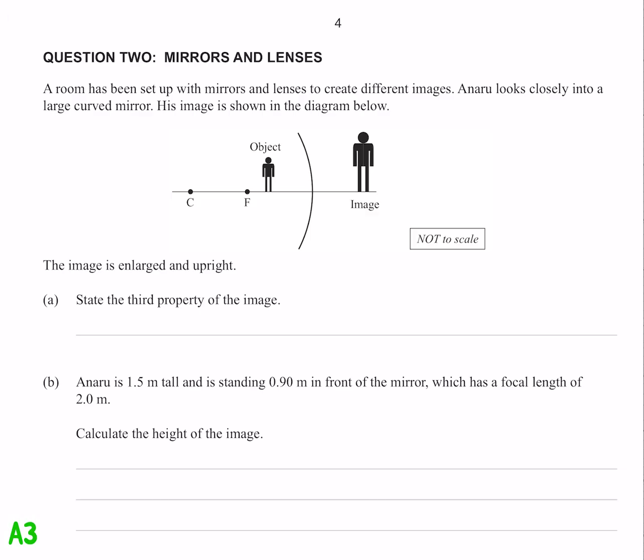Question 2, here's a bunch of stuff we're not going to read. We have a concave mirror, the image is enlarged and upright, state the third property of the image. It's behind the mirror, so it's virtual.